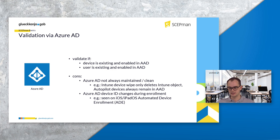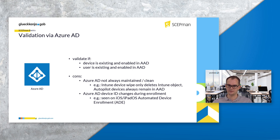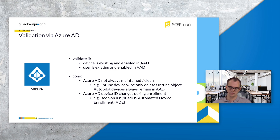We have also seen situations where the Azure AD device ID changes during enrollment. A good example is the enrollment of iOS and iPadOS via Automated Device Enrollment. The device gets enrolled and receives its certificate, but the problem is that the certificate contains the Intune ID because the device does not yet have an Azure AD device ID at that point. When you later search for the device, you won't find it because the device's final Azure AD device ID is different, causing the OCSP request to fail — SCAPMAN cannot find the device and marks the certificate as invalid.